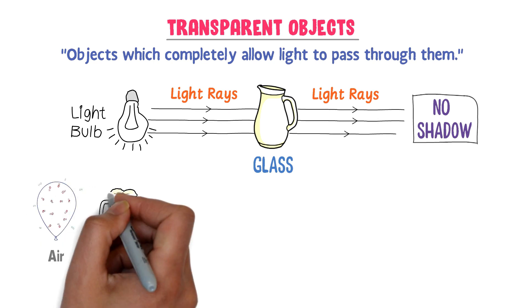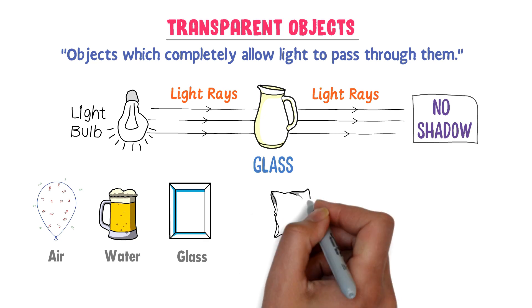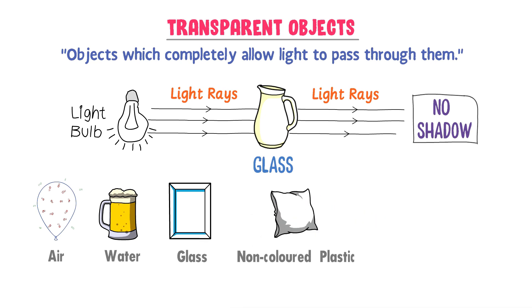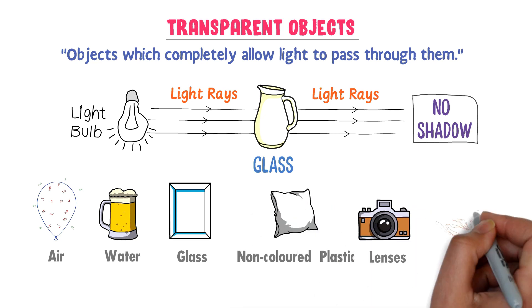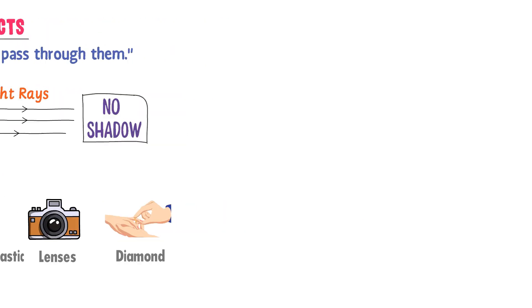For example, air, water, clear glass, non-colored plastics, lenses, diamond, window glass, etc. These all objects are transparent objects because they allow light to pass through them and they do not create any shadow.